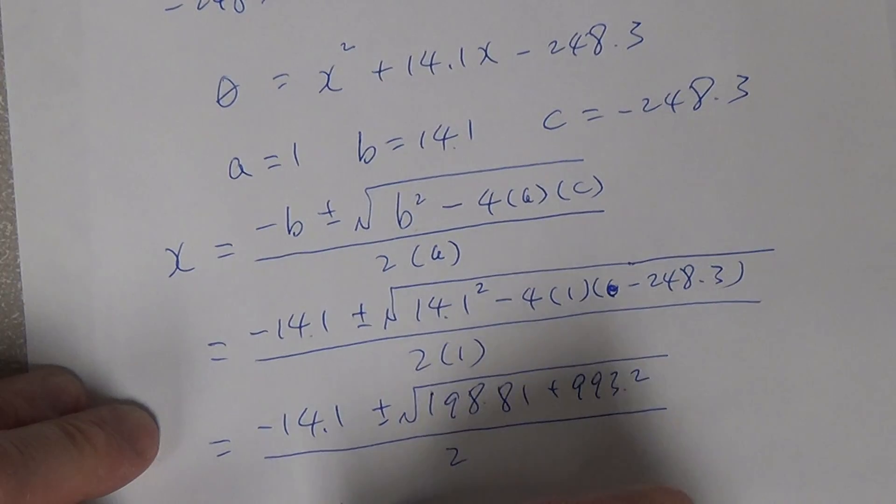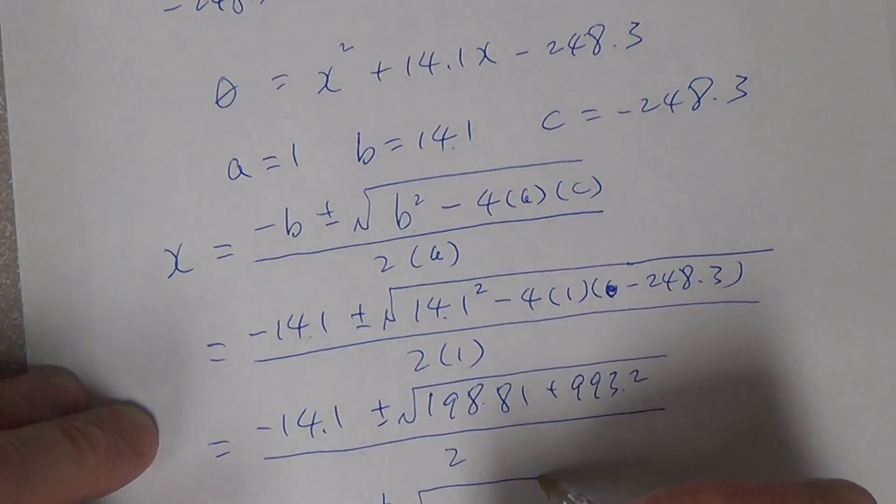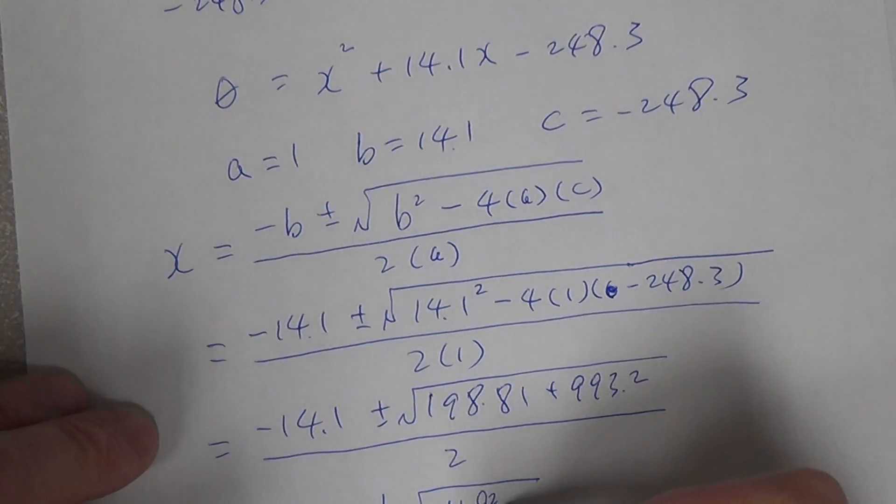Negative 14.1 plus minus, now the number in the square root is 1192.01 divided by 2.